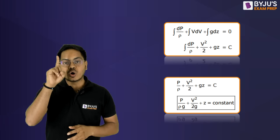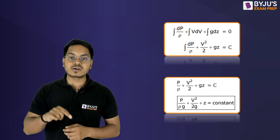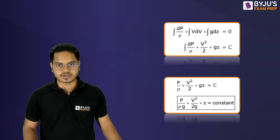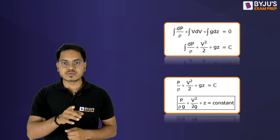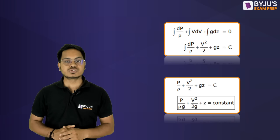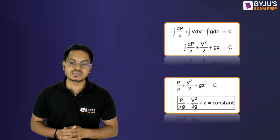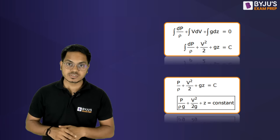Integrating the Euler equation gives: p/ρg + v²/2g + z = C. Remember, this calculation is done along a single streamline, so the constant C is different for every streamline. To avoid computing constants for every streamline, we take an additional assumption: the flow is irrotational. With this, all streamlines behave similarly and share the same constant, making p/ρg + v²/2g + z = constant the Bernoulli's equation valid across the entire flow.